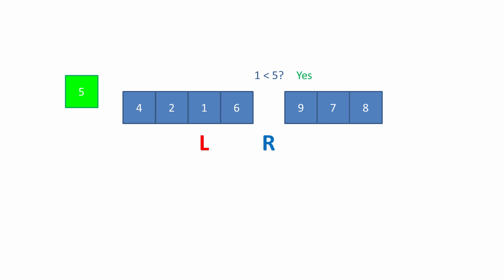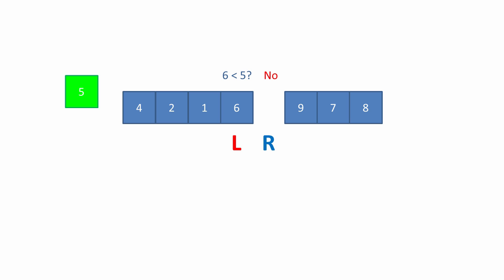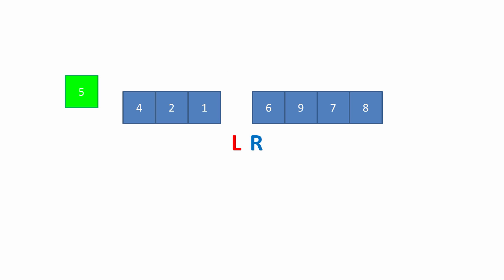And because we've just moved something to the left-hand pointer, we advance it. Now we ask: is six less than five? The answer is no, so we're going to move the six to the right-hand pointer. And now we advance the right-hand pointer. The pointers have collided — this gives us the position for the pivot value, which can now be slotted into place.